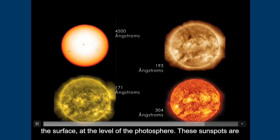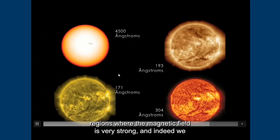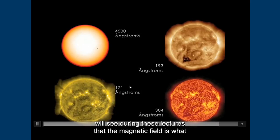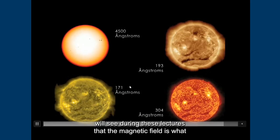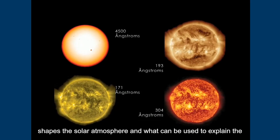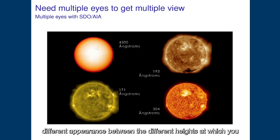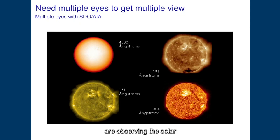These sunspots are regions where the magnetic field is very strong. And indeed, we will see during these lectures that the magnetic field is what shapes the solar atmosphere and what can be used to explain different appearance between the different heights at which you are observing the solar atmosphere.